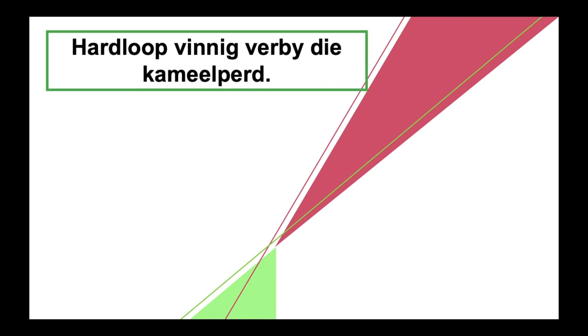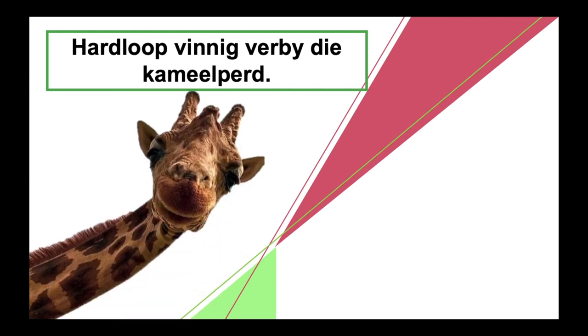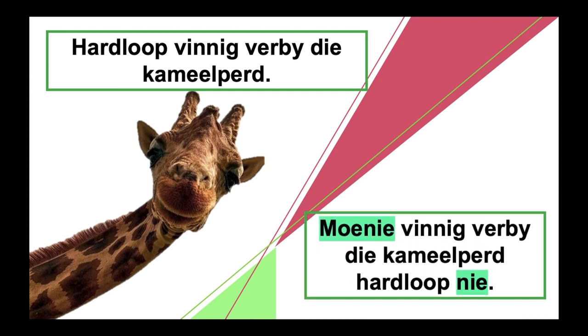Let's see if you can do these on your own — same as before, when you see the giraffe the answer pops up. Note: it's like someone mentioning your name before telling you what to do, like saying 'John, pick up your clothes' — it's still an instruction, they just mentioned your name first. 'Susan, vuur die kameelpaard' becomes 'Susan, moenie die kameelpaard vuur nie.' 'Hardloop vandag verby die kameelpaard' becomes 'Moenie vandag verby die kameelpaard hardloop nie.'